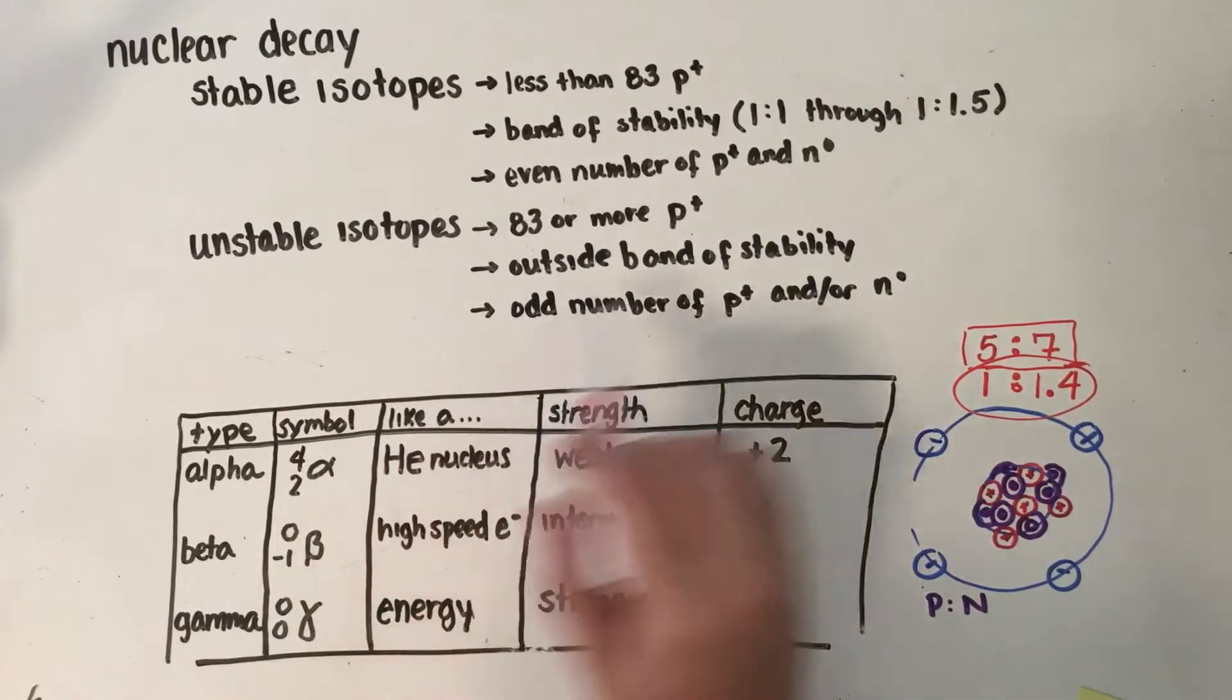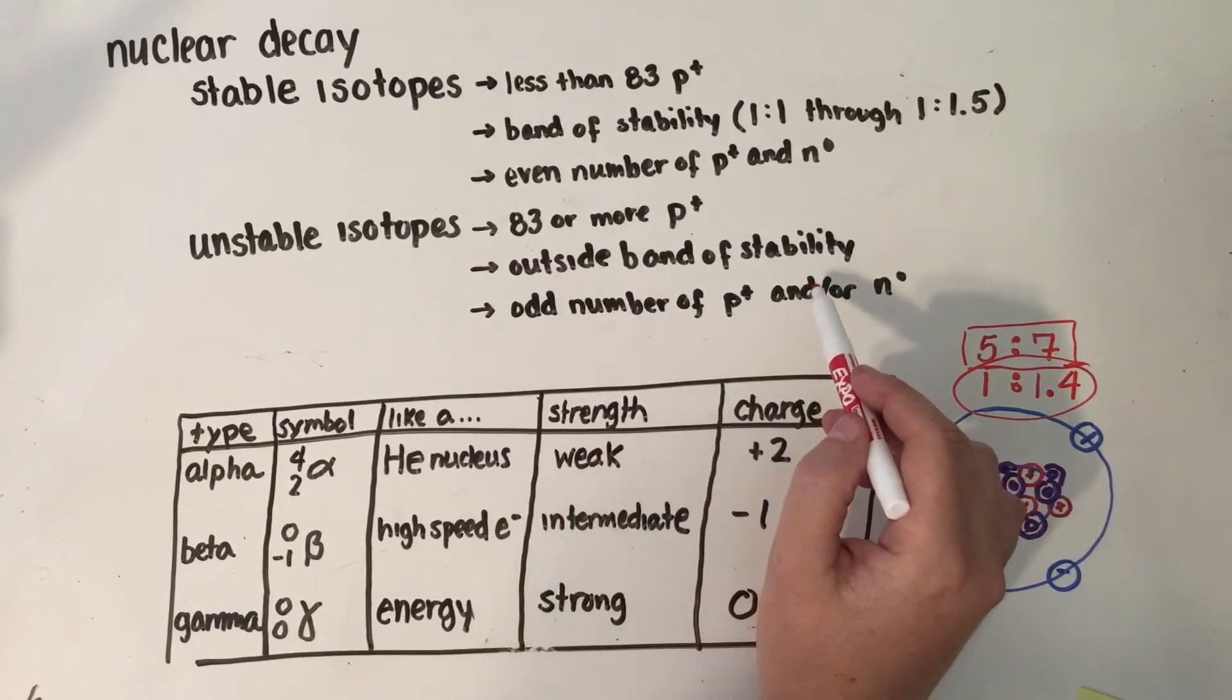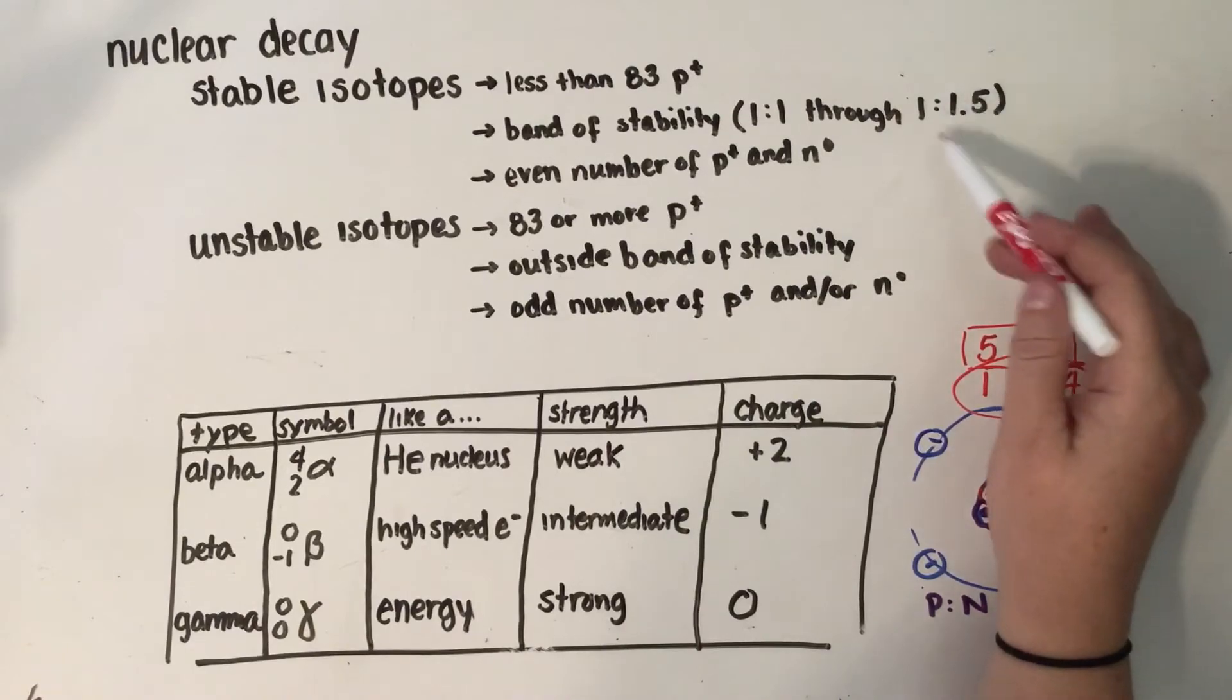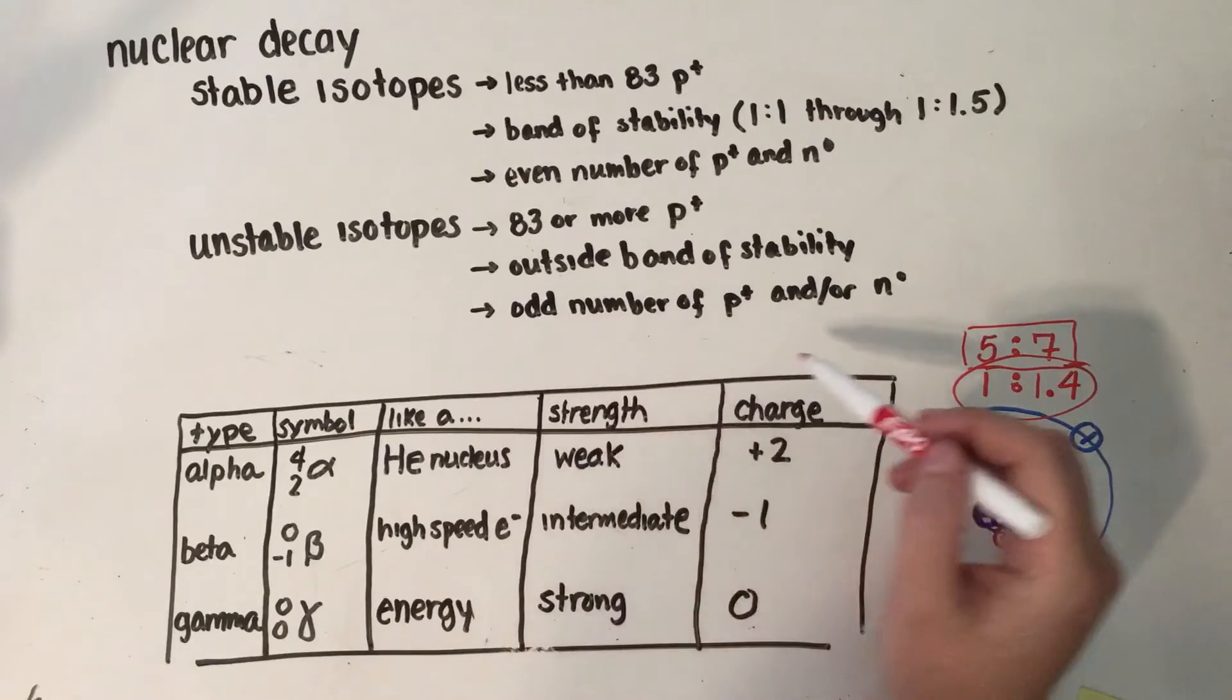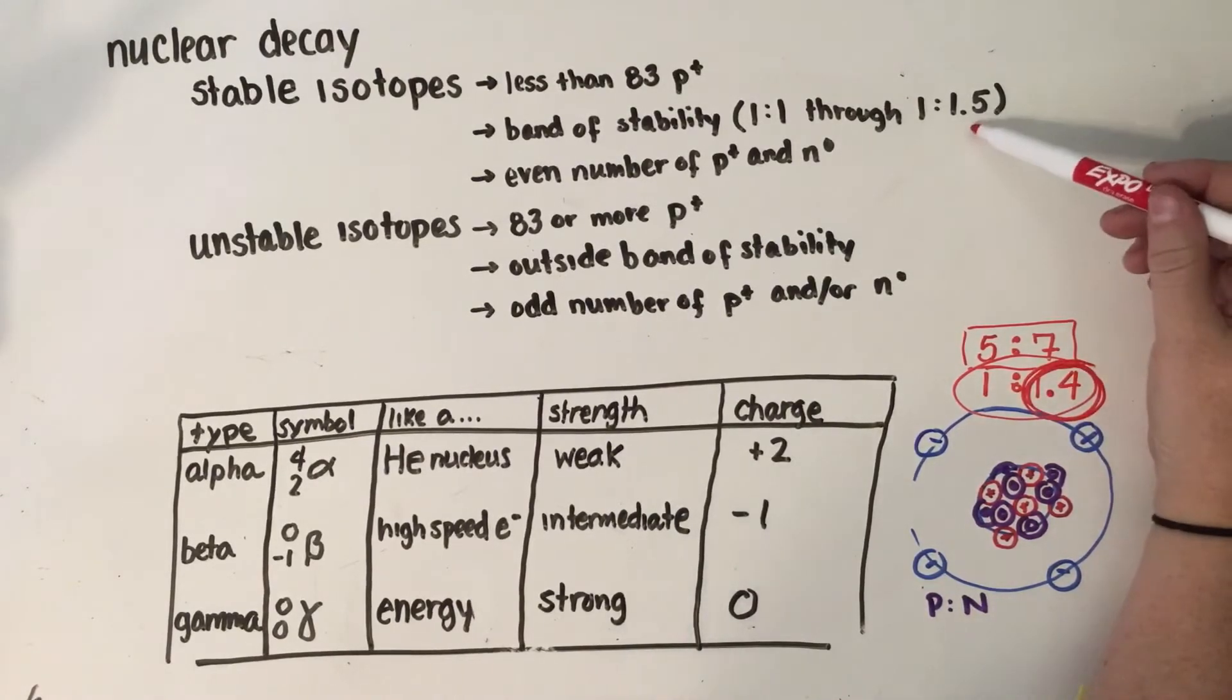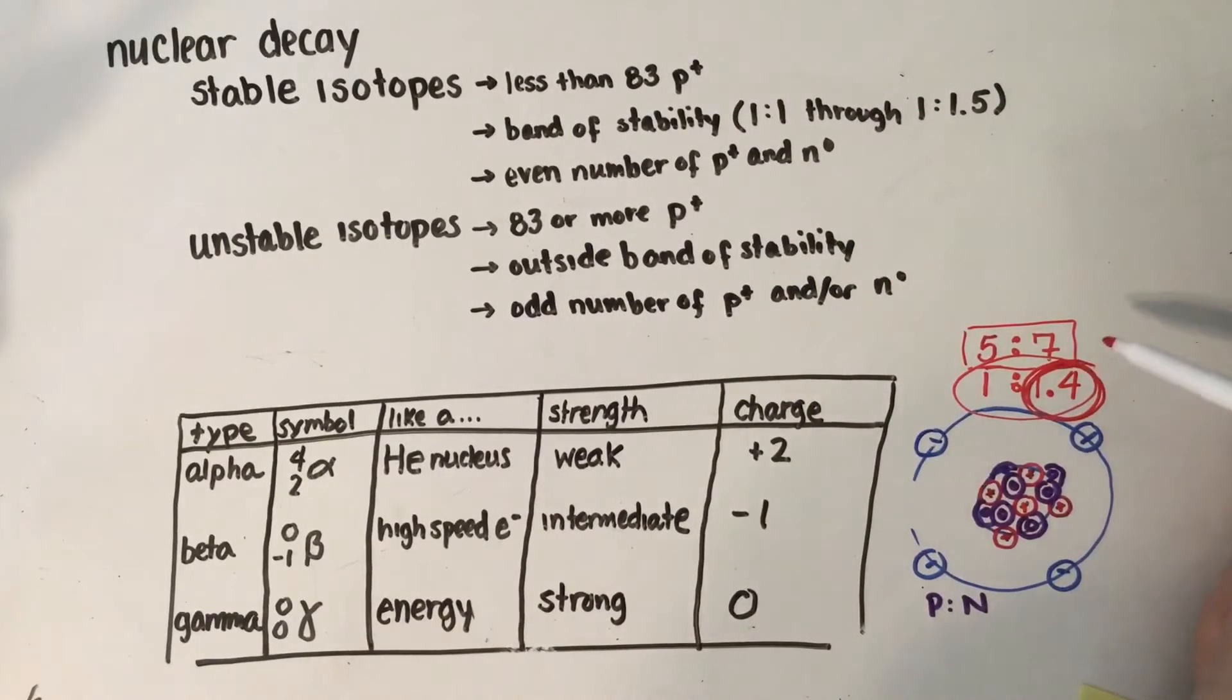Remember, unstable isotopes have 83 or more protons, so really big nuclei, outside the band of stability, so the ratio comes either higher or lower than 1.5 or 1 to 1, and it's going to have odd numbers of protons and/or odd numbers of neutrons. I would say that this one would be less stable than many other isotopes because it has a fairly high ratio, which for the smaller atoms tend to be closer to the 1 to 1 side, and it had the odd numbers of both protons and neutrons.